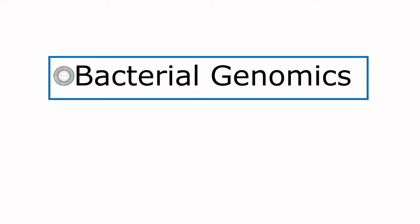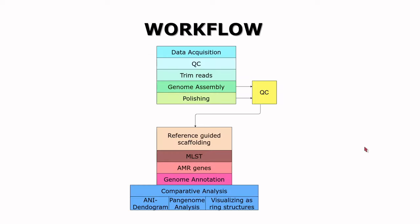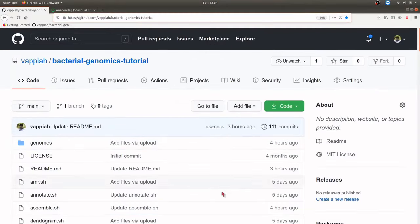Hello guys, welcome once again to another YouTube tutorial on bioinformatics. Today's tutorial is going to be on bacterial genomics, where I demonstrate with real world data how bacterial genomes can be analyzed. In the course of the tutorial you'll get to know what kinds of analysis can be done if you have bacterial genomes. This is the pipeline I'm going to use, where you follow a series of steps to get information about your genome, understand your genome, and compare the genetic makeup of your isolates with other organisms. I've made available the scripts and the entire pipeline on my GitHub page, so you can always go and download them and reproduce whatever I'm doing.